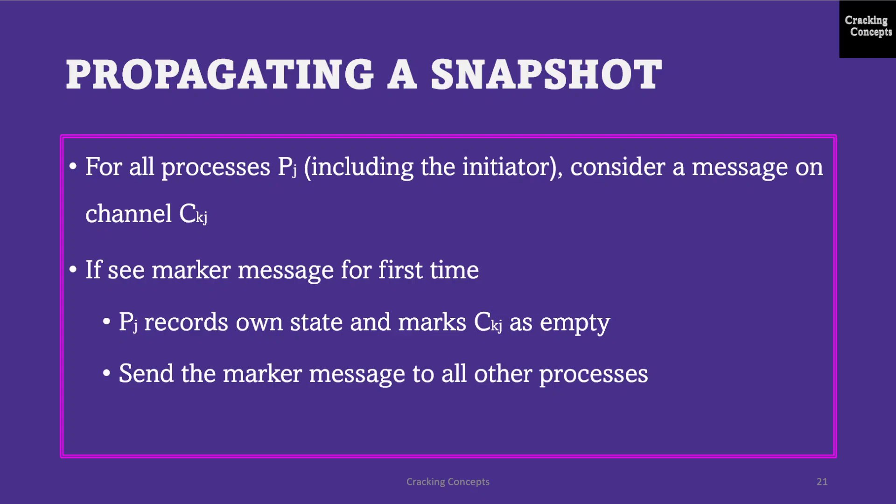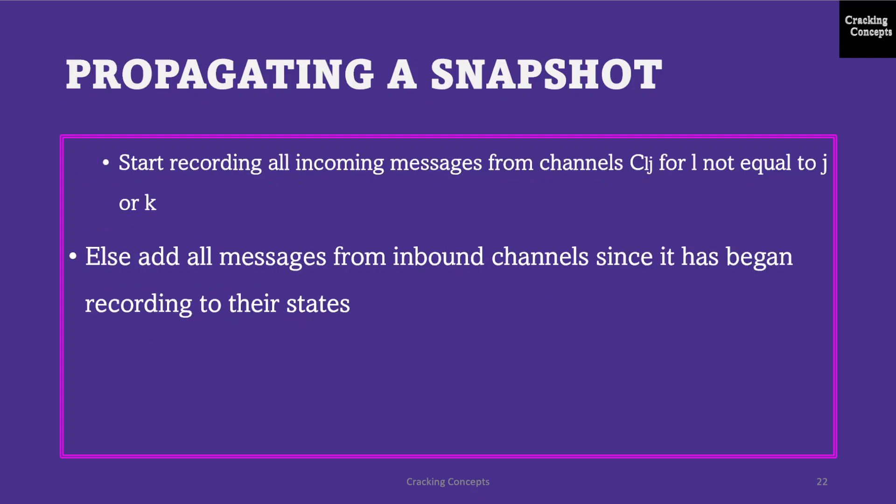To propagate a snapshot, for all processes including the initiator, consider a message on channel CKJ. If the process PJ is seeing the marker message for the first time, it should record its own state and mark the channel CKJ as empty. Then it should send the marker message to all other processes using the n-1 outbound channels, and start recording all incoming messages from channels CLJ where l is not equal to j or k. If it is not receiving the marker for the first time, it should add all messages from the inbound channels since it has already begun recording its state.